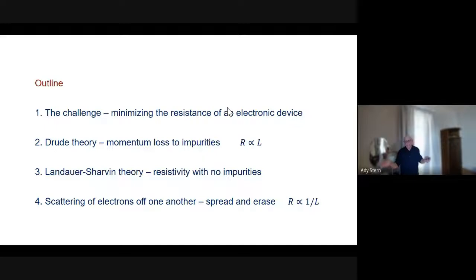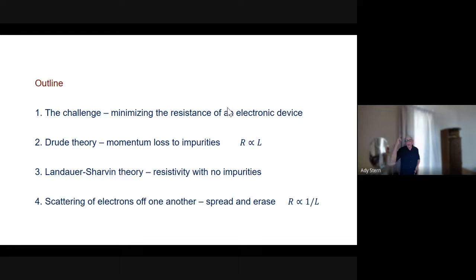Independent of the length of the system but non-zero. The main part of my talk is going to be about what happens when the electrons scatter off one another. I'm going to claim there is a way to make the resistance not proportional to the length, not independent of the length, but inversely proportional to the length — so the longer the system is, the smaller the resistance.